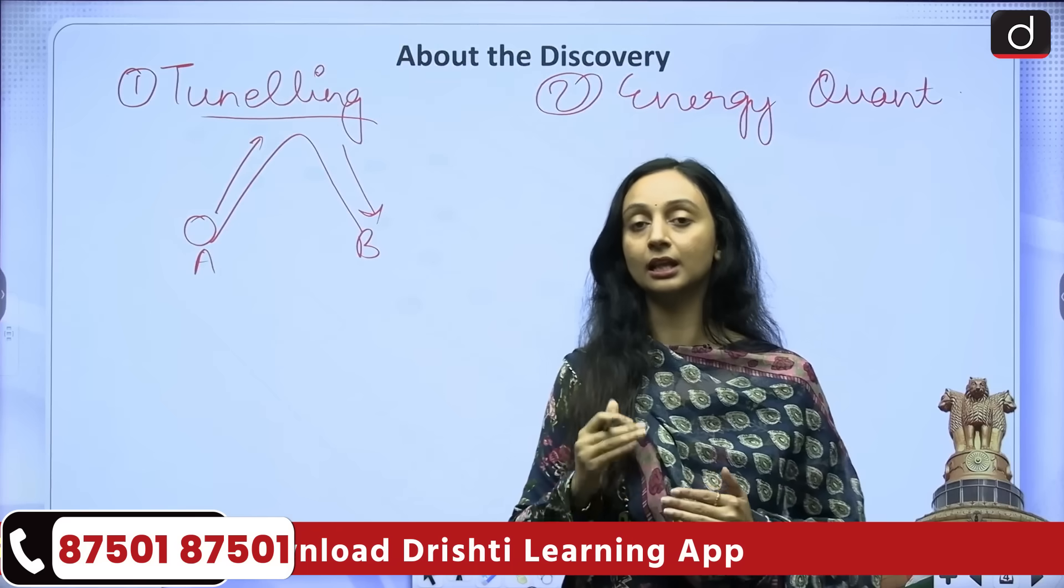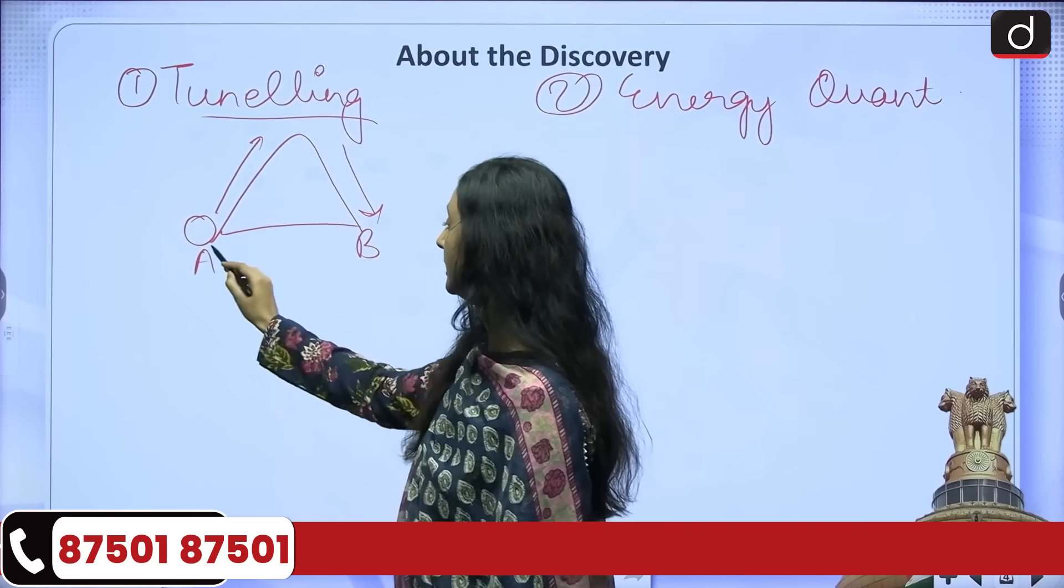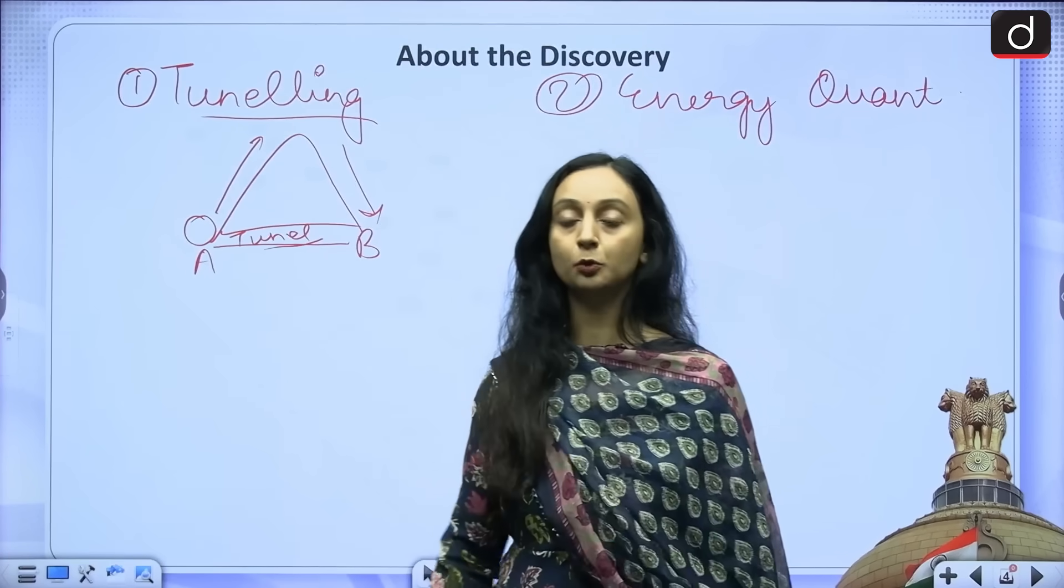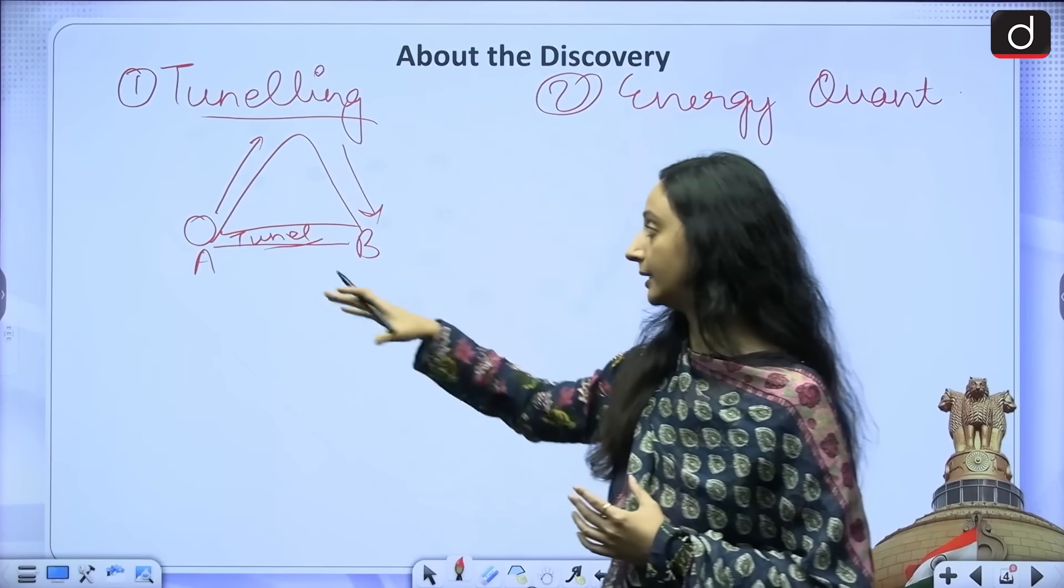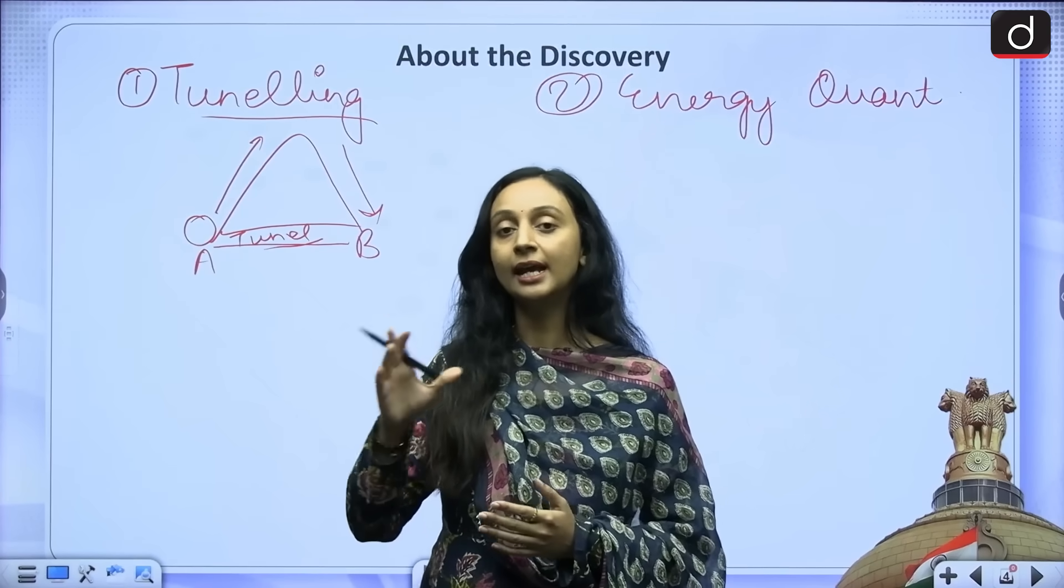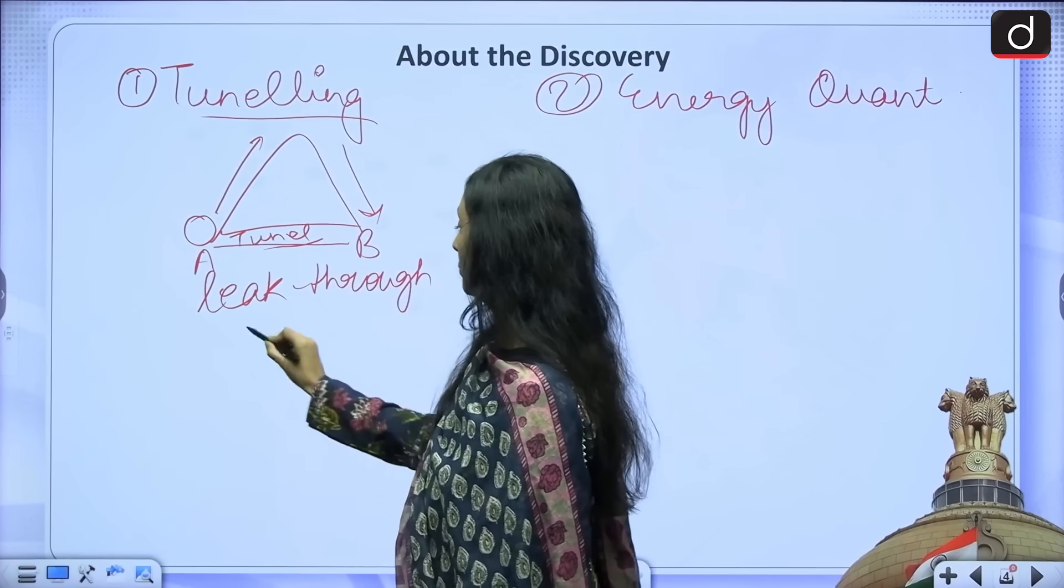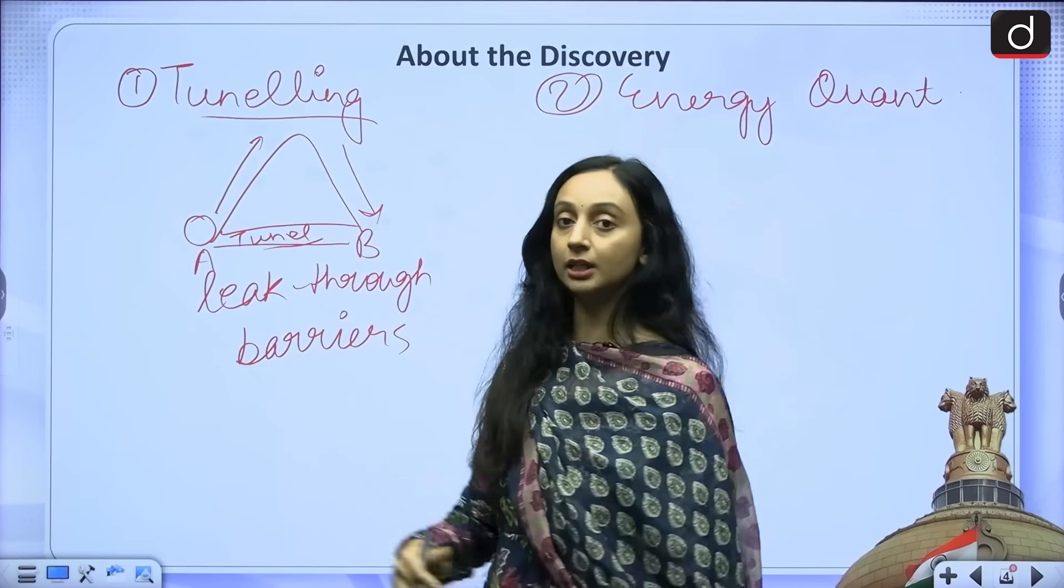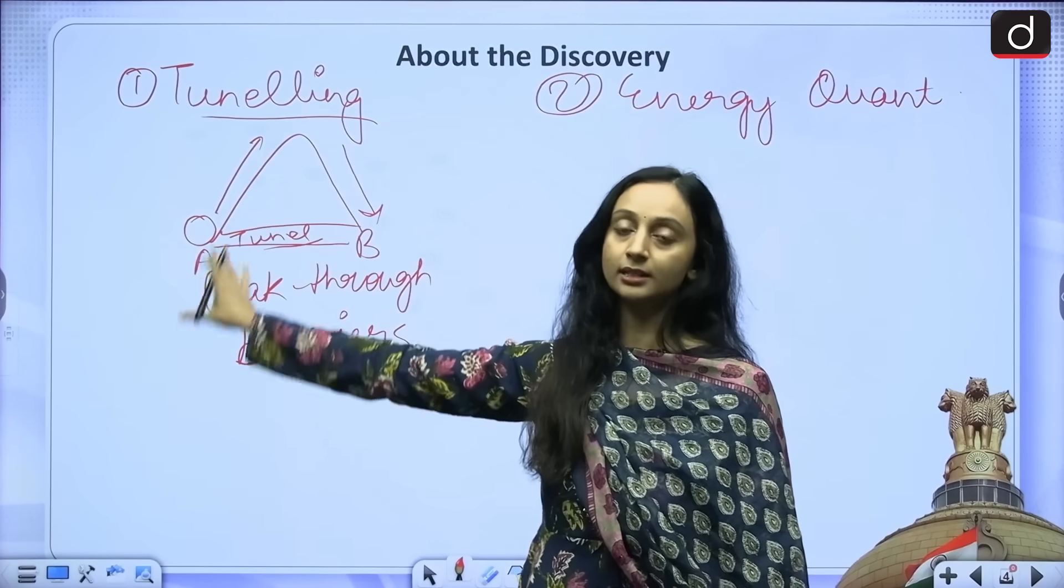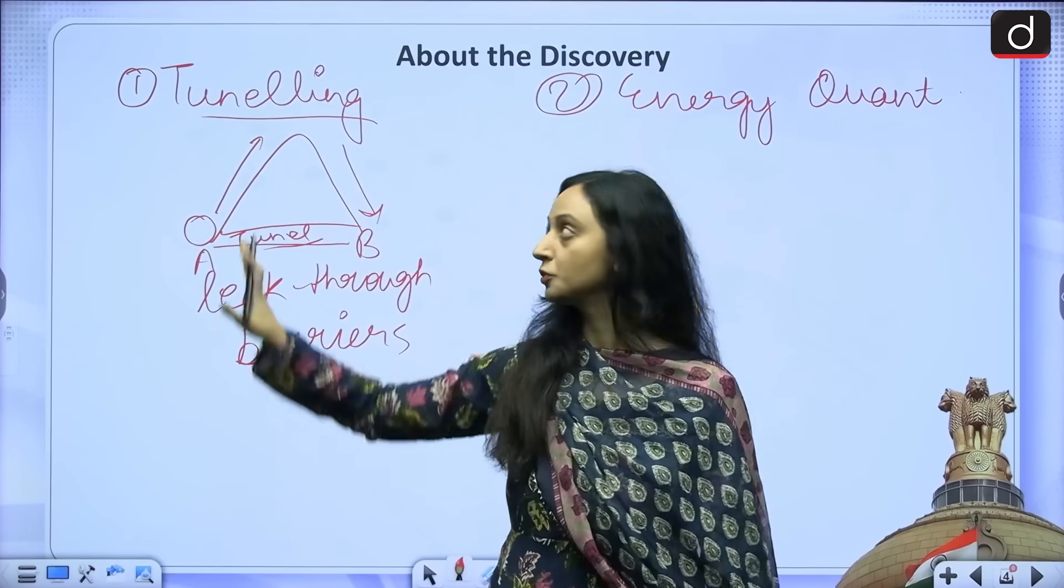This is the normal physics scenario or the classical physics scenario versus what happens in quantum mechanics. In the case of tunneling this ball will be magically transported from point A to point B through a tunnel, because we believe that these electrons, these particles, they also behave as particles as well as waves. And these waves can basically leak through the barriers. Waves know no barrier. So they can leak through the barriers and they can magically transport from one place to another. They can magically tunnel through one place to another. And this entire process is known as tunneling. This phenomena is known as tunneling and is observed at a microscopic level, at a quantum level. So first phenomena is tunneling.